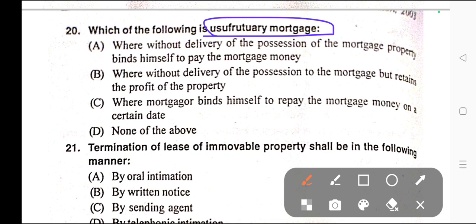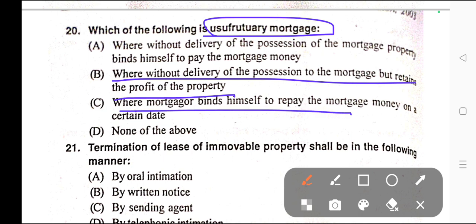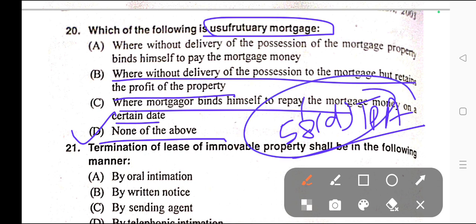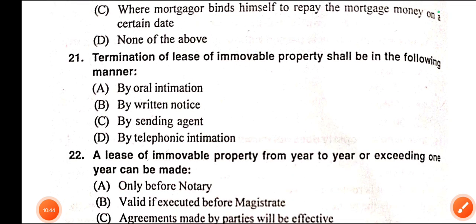Question number twenty: Which of the following is the definition of usufructuary mortgage? A) Where without delivery of possession of the mortgaged property the mortgagor binds himself to pay the mortgage money, B) Where without delivery of possession but retains the profit of the property, C) Where the mortgagor binds himself to repay the mortgage money on a certain date, D) None of the above. Correct answer is option D — none of the above. Under Section 58 Clause D of TPA, in usufructuary mortgage the property is given as security to the mortgagee who is let into possession and permitted to repay himself out of the rents and profits. Read Section 58 of the Transfer of Property Act.